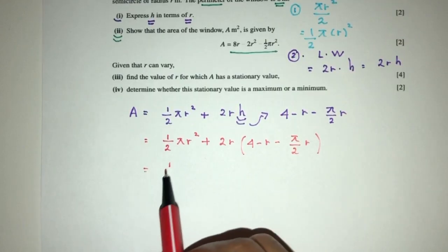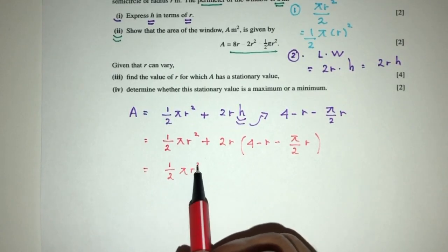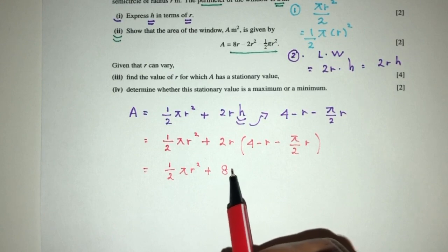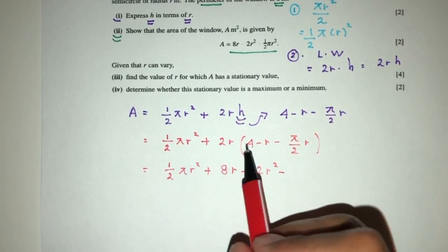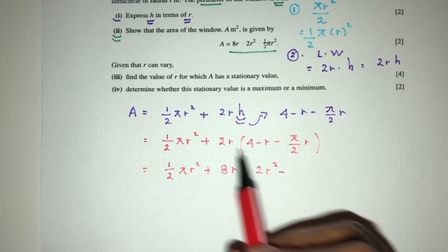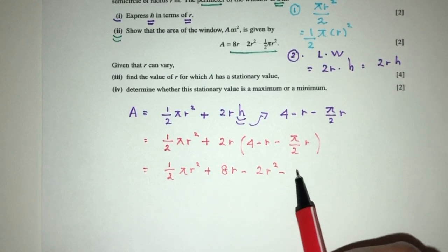So you'll have half πr² plus 2r times (4 minus r minus πr over 2). Now, let's see, what do we get? Half πr² plus 8r minus 2r². Here, you will have minus, this will be canceled out, you want πr².